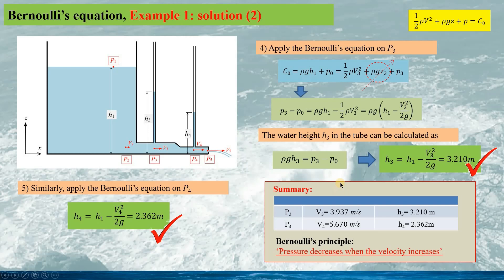In the summary, if we compare P3 and P4, we can see the velocity at P3 is smaller than the velocity at P4, but the corresponding height h3 is larger than h4. This means the pressure at P3 is higher than the pressure at P4. This proves Bernoulli's principle: pressure decreases when the velocity increases. The velocity increases from V3 to V4, but the pressure decreases from h3 to h4.